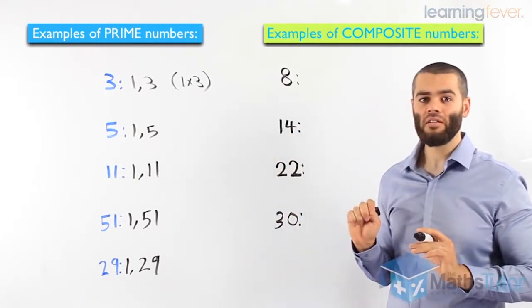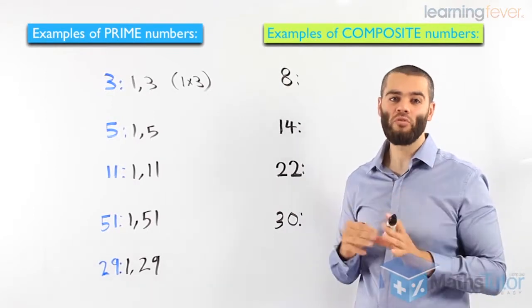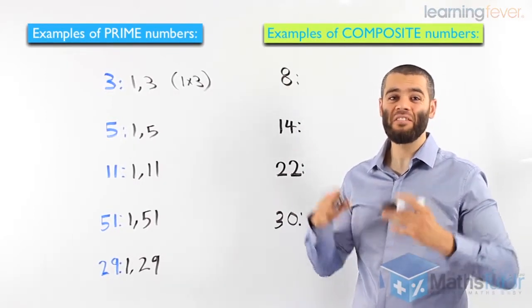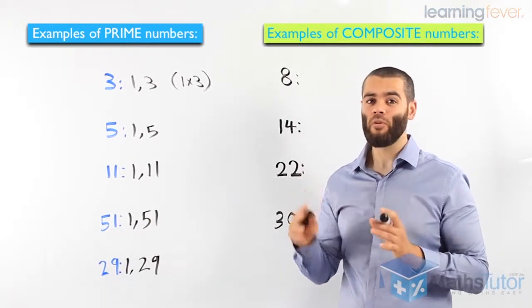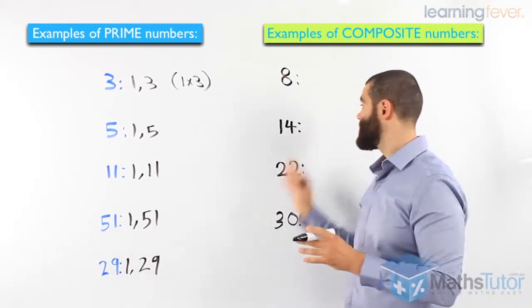Composite numbers, on the other hand, they have more than 2 factors. They can have 2, 4, 6, sometimes 8, sometimes even 12 factors. So they are composite numbers. Well, prime only 2 factors.